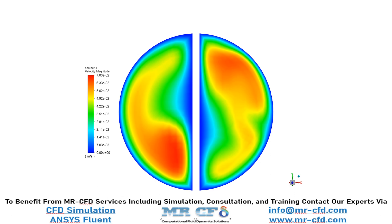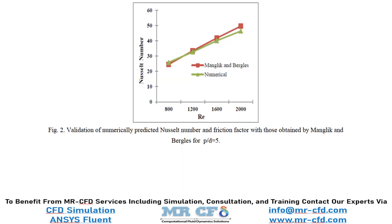In this slide you can see the velocity contours on the outlet boundary. You can use these contours and compare them with the contours provided in the paper. We have again brought to you figure 2 of the paper, and we are going to extract the Nusselt number calculated in our CFD simulation and compare it with the paper's result for Reynolds number equal to 800.